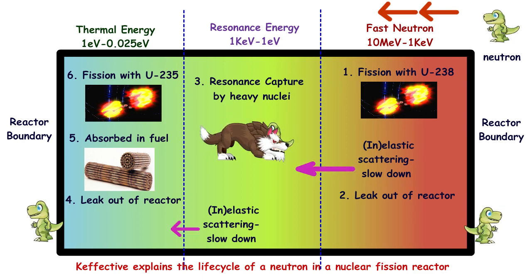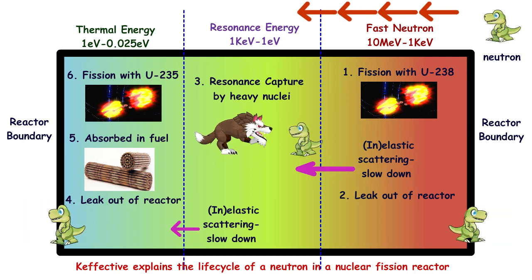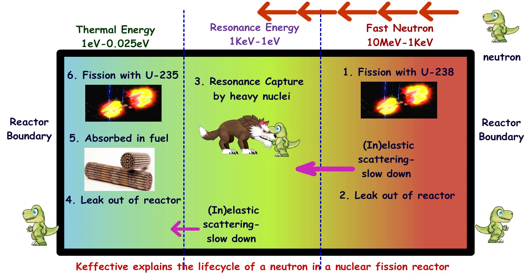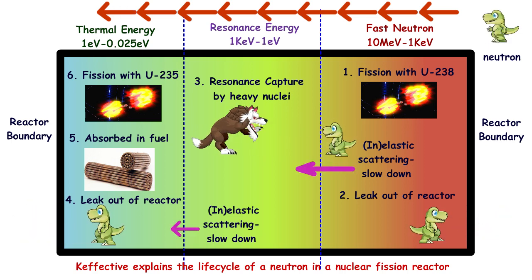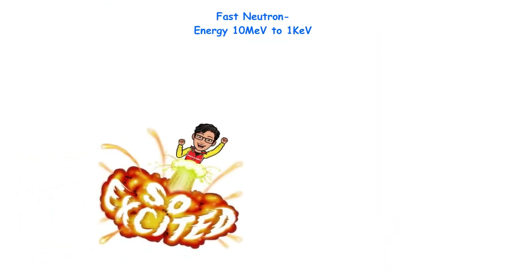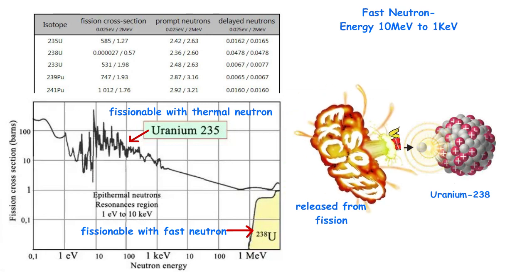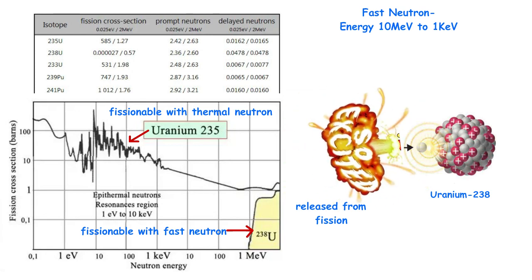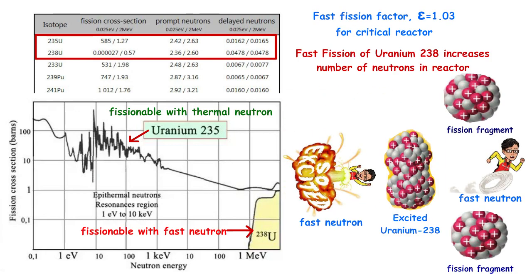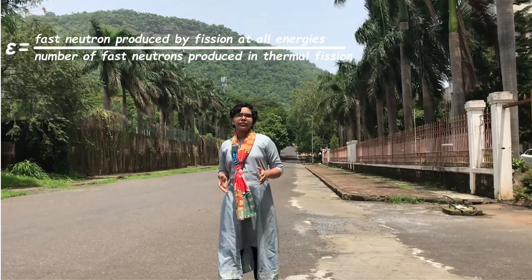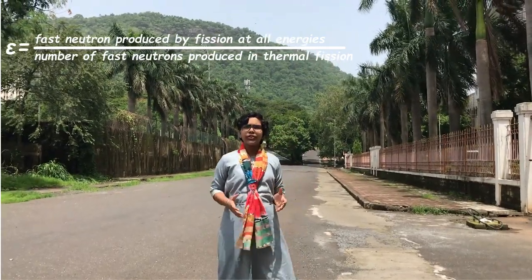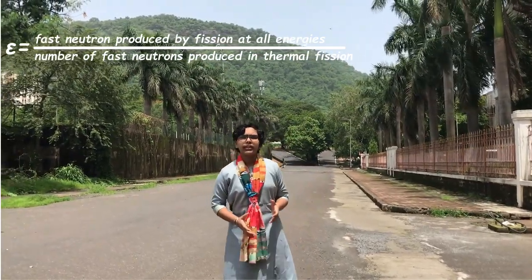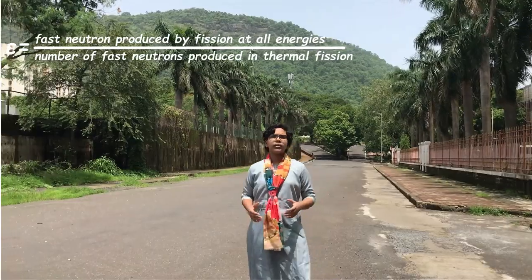K-effective tells us about the life cycle of neutrons in a nuclear reactor. Neutrons released from fission are fast neutrons, which slow down to resonance energy and finally to thermal energy. Imagine you have a fast neutron released after nuclear fission — it can cause a nuclear fission reaction in uranium-238, producing more fast neutrons.